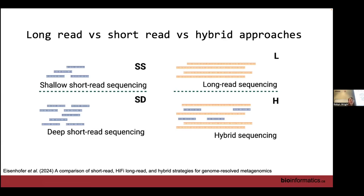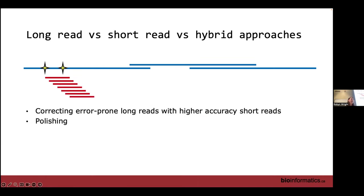We have short-read, long-read, and hybrid approaches. Hybrid approaches are designed to work around the lower accuracy of long reads — early long-read approaches had around 80–90% accuracy compared to ~99.7–99.9% for short reads. Often you use long reads for assembly — since you're more likely to get overlaps — and then correct error-prone long reads by mapping high-accuracy short reads onto them.